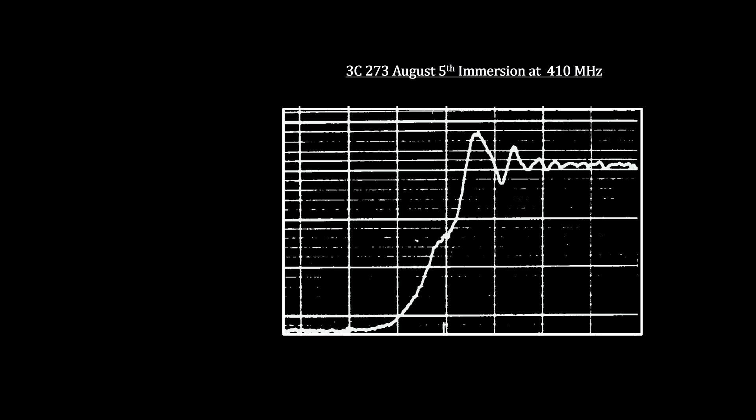Now let's take a look at what the astronomers found when they actually monitored their three occlusions in 1962. Here's the immersion pattern on August 5th. This bump at the end indicated that the source had some sort of structure. It's not just one object.